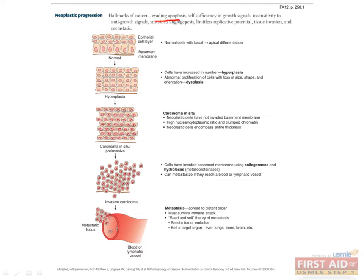They can evade apoptosis, they can grow without growth signals, they can ignore anti-growth signals, and they can stimulate their own never-ending blood supply. What makes things worse, cancers also develop the ability to break out of the tissue where they normally live, and cause complete devastation to the entire body. It is really scary how much these little cells can do.